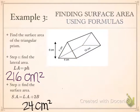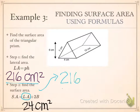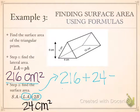To find the surface area, I simply combine the two values. I take my lateral area, which was 216, and add the value for my two bases, which was 24 square centimeters. 216 plus 24 equals 240 square centimeters. That's our final answer for the surface area of this triangular prism.